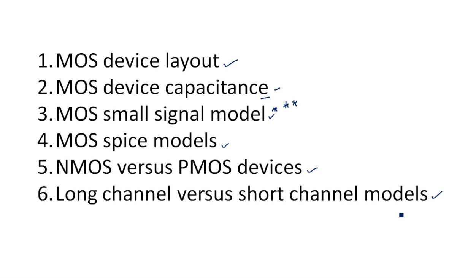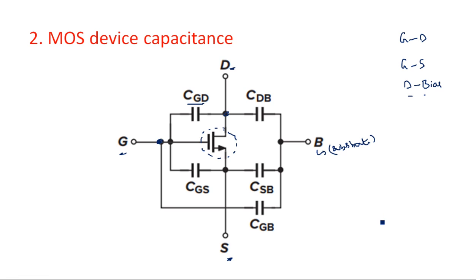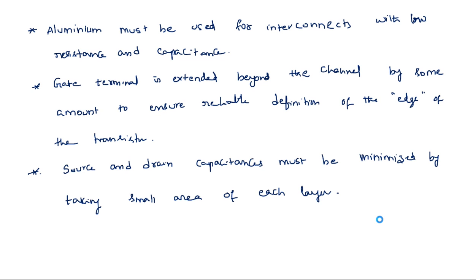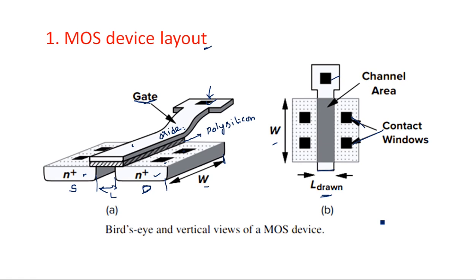In this video I am going to continue the previous MOS device models. We have seen MOS device layout and MOS device capacitances - the different capacitors existing in the MOS transistor without our influence. In this video I am going to explain four other MOS device models: small signal model, SPICE models, NMOS versus PMOS devices, and long channel versus short channel devices.